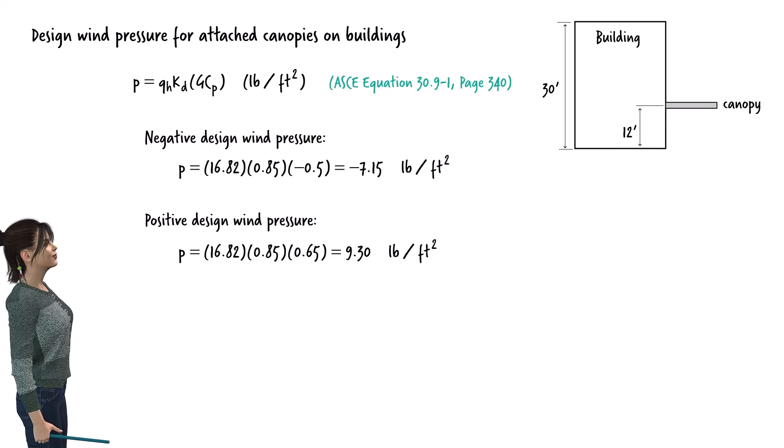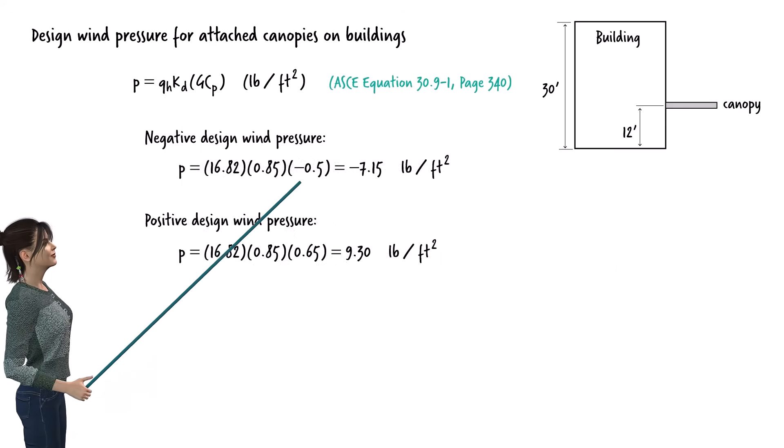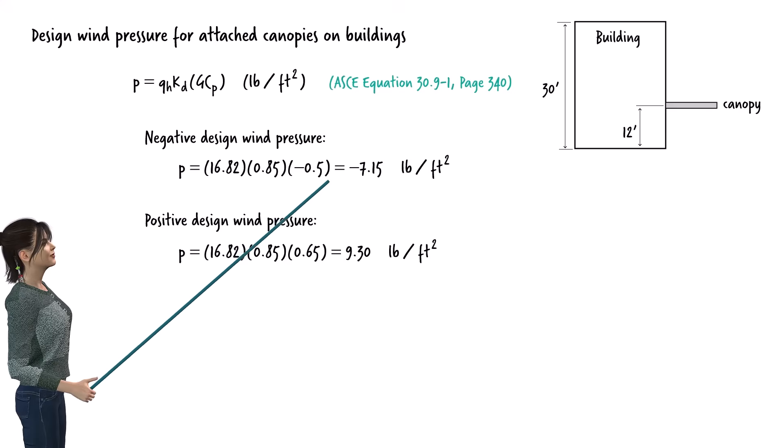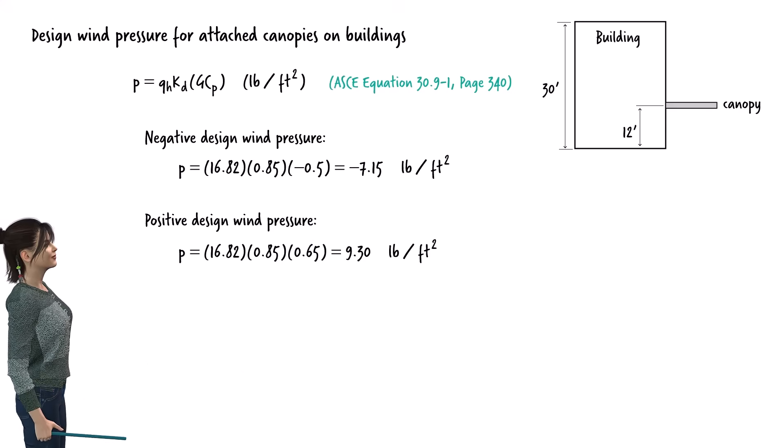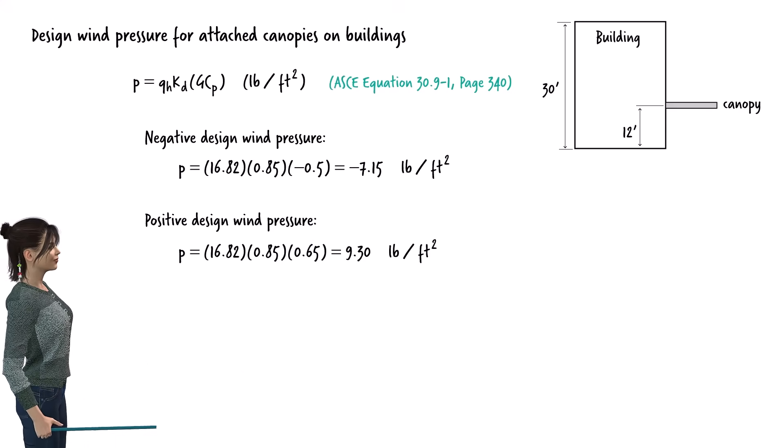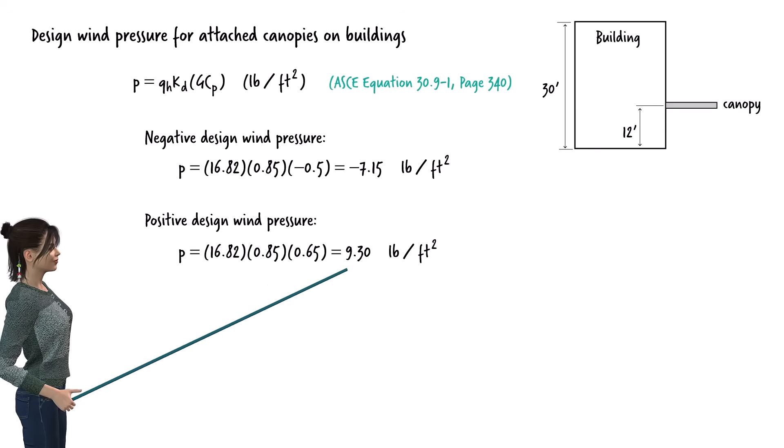Using the negative coefficient of 0.5, we obtain a design wind pressure of 7.15 pounds per square foot. Using the positive coefficient of 0.65, we obtain a design wind pressure of 9.3 pounds per square foot.